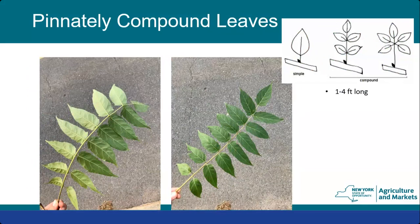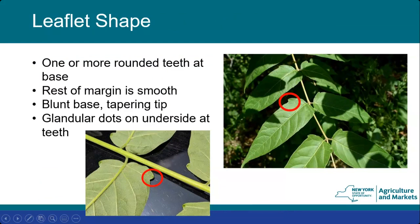Tree of heaven has pinnately compound leaves — each of these pictures shows one single leaf with leaflets coming off the stem. You can see the leaflet and the little notch at the base. There's also a tiny gland on the underside of the tip of that notch — if you really want to confirm identification, flip over the leaf and look for that gland at the base.